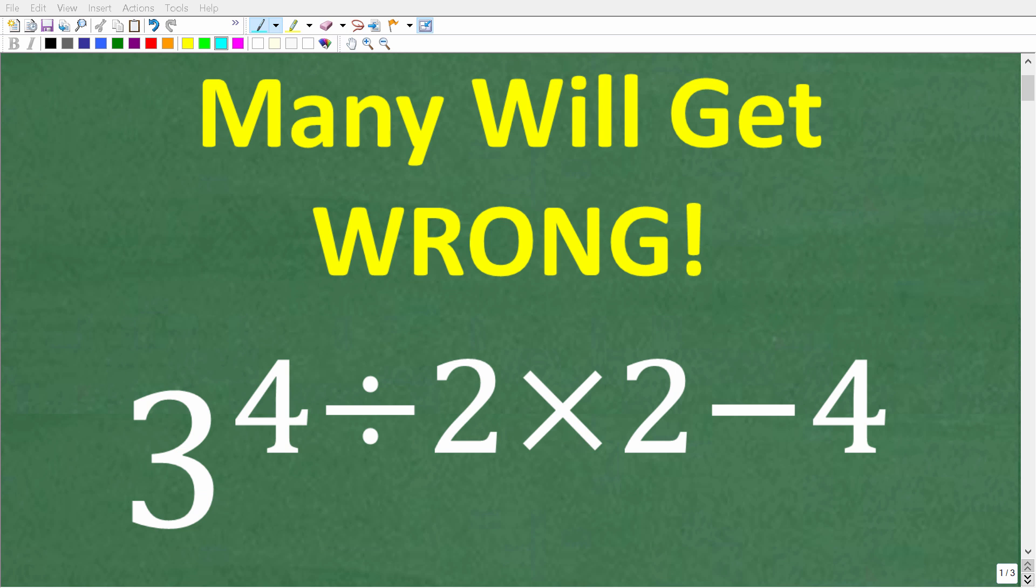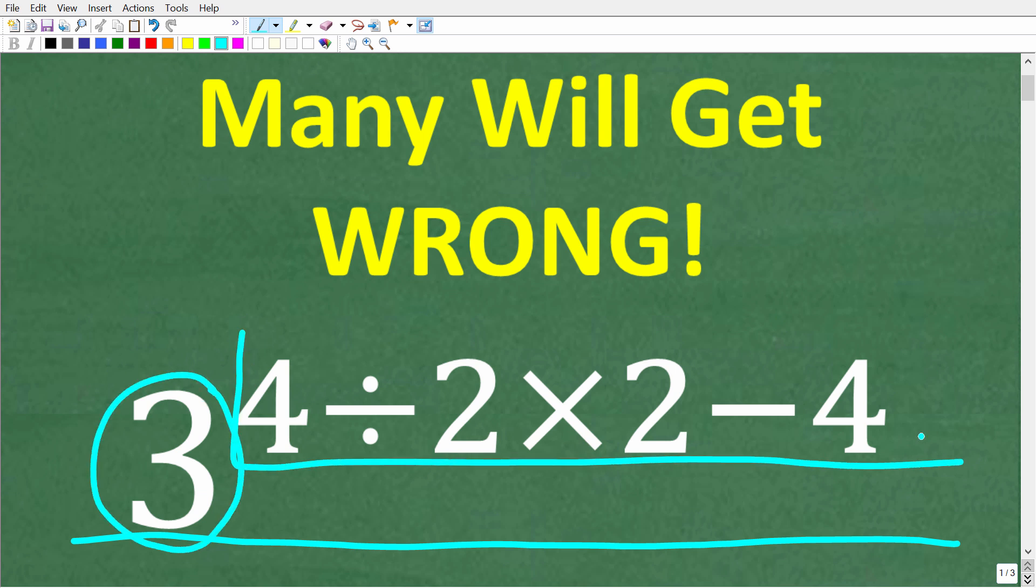Many people are going to be shocked that they don't know enough basic math to solve this problem without a calculator. So let's see if you can figure this out. We have 3 to this power, where the exponent is 4 divided by 2 times 2 minus 4.